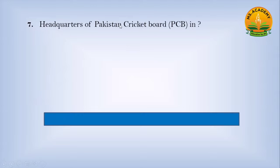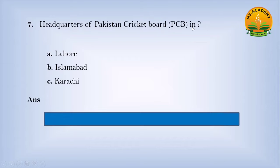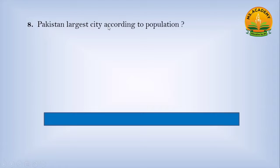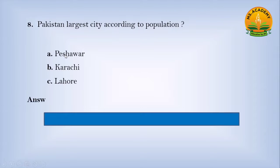Headquarters of Pakistan Cricket Board (PCB): option A Lahore, option B Islamabad, option C Karachi — answer is A, Lahore. Pakistan's largest city according to population: option A Peshawar, option B Karachi, option C Lahore — answer is B, Karachi.